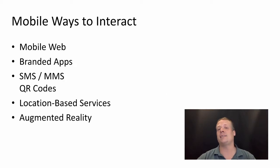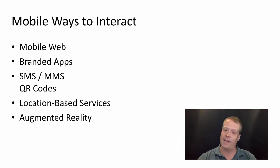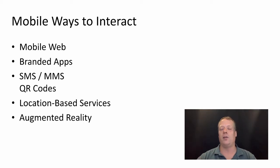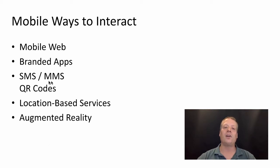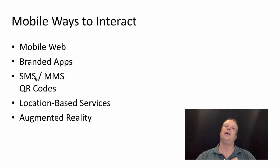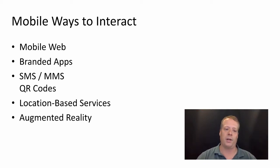There are a lot of ways to interact with users on mobile. Two of these — the mobile web and branded apps — we've spent a lot of time talking about before, so I'm not going to rehash those. However, there are some we haven't talked about yet, like SMS, MMS, QR codes, location-based services, and augmented reality and how it affects mobile marketing. So I'm going to talk a little bit about those.